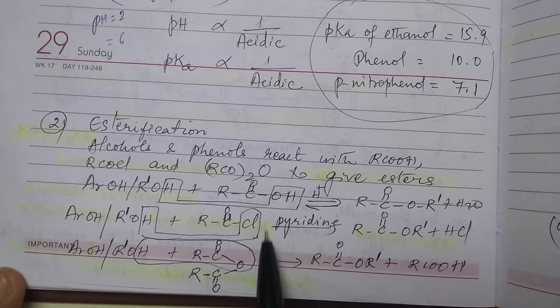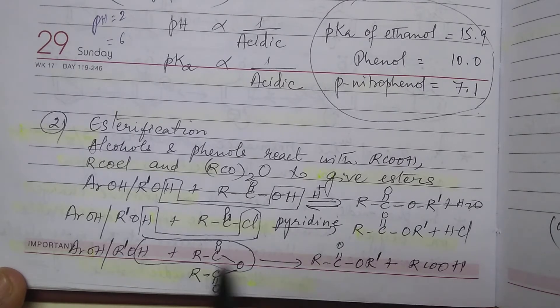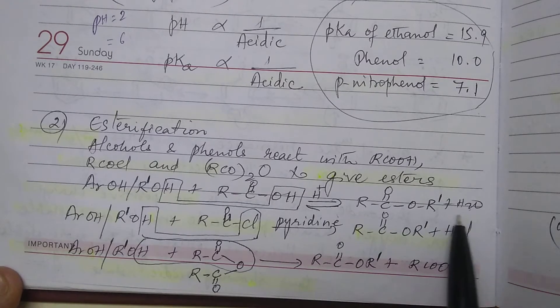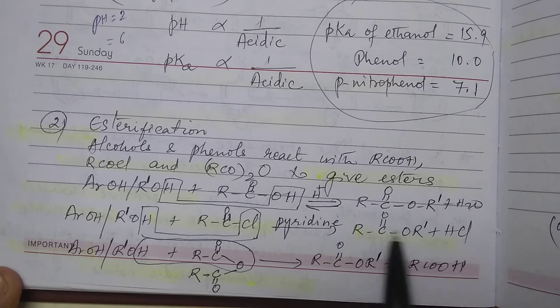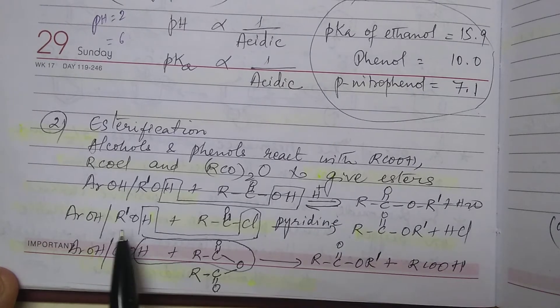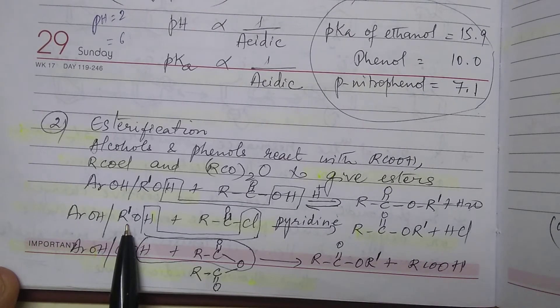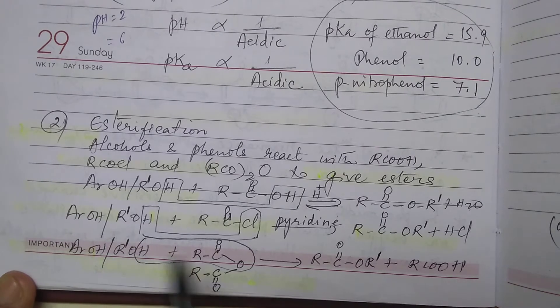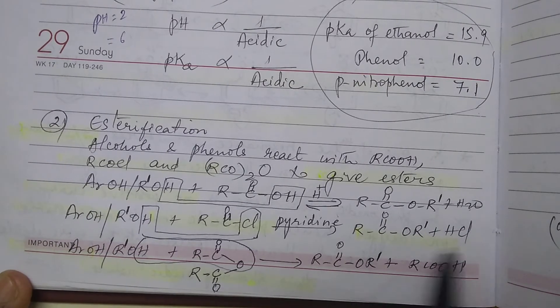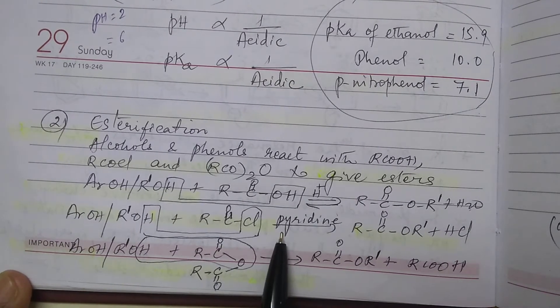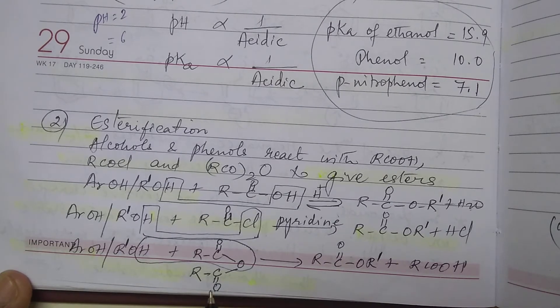Now why is pyridine added here? If pyridine is not added then what will happen? The HCl that is produced may hydrolyze ester to give back the reactants. So to neutralize HCl, pyridine is added. That is why pyridine is added here.